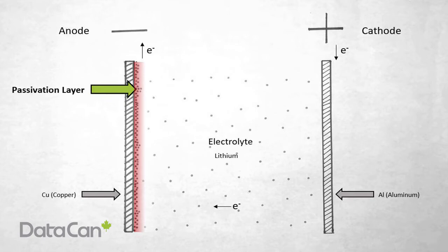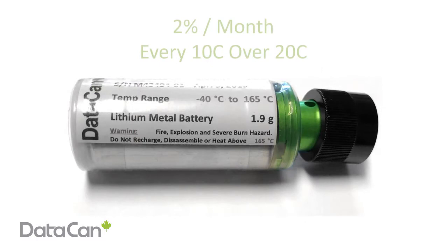At higher temperatures, the passivation layer cannot form. This is a problem with long-term high-temperature downhole applications. Self-discharge can occur about 2% per month for every 10 degrees Celsius over 20 degrees Celsius.